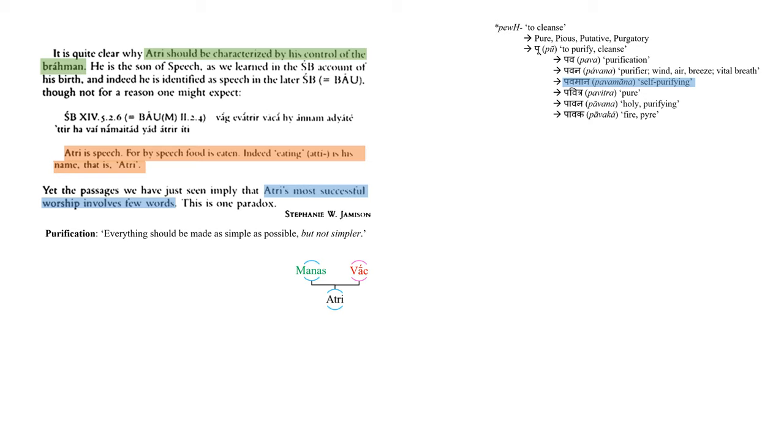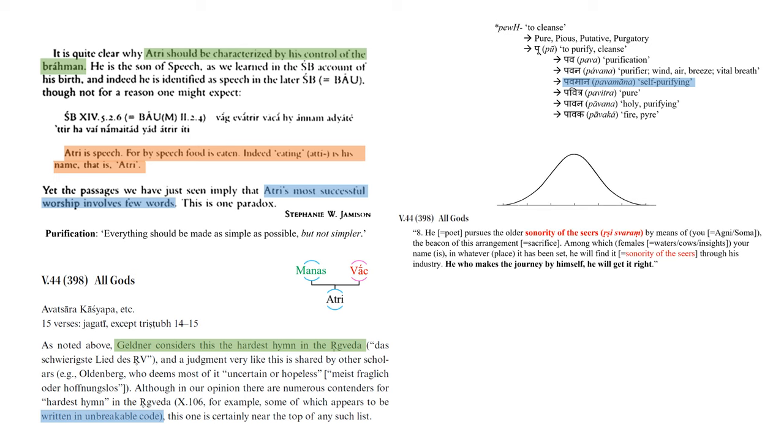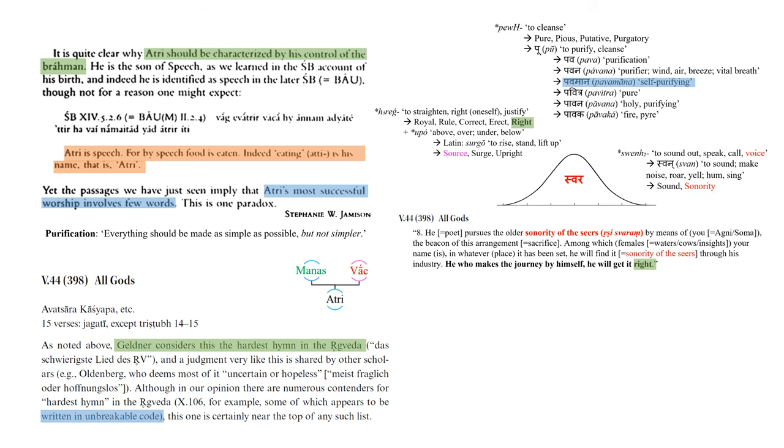In keeping with the theme of meta-languages as inherently forms of cryptic speech, Jameson and Brereton's comments about a hymn from Atri's Mandala are sufficient to make this point. As noted above, Geldner considers this the hardest hymn in the Rig Veda, and a judgment very like this is shared by other scholars. Some of which appears to be written in unbreakable code. So let's take a verse from this hymn, which states: He pursues the older sonority of the seers by means of the beacon of this arrangement. Now, immediately we're reminded, by memory, of the sonority hierarchy, with swadas in the middle, creating for us the swelling mound that all journeys of speech must make to become seers among the sharp-eared ones, the grove of the ascetics.